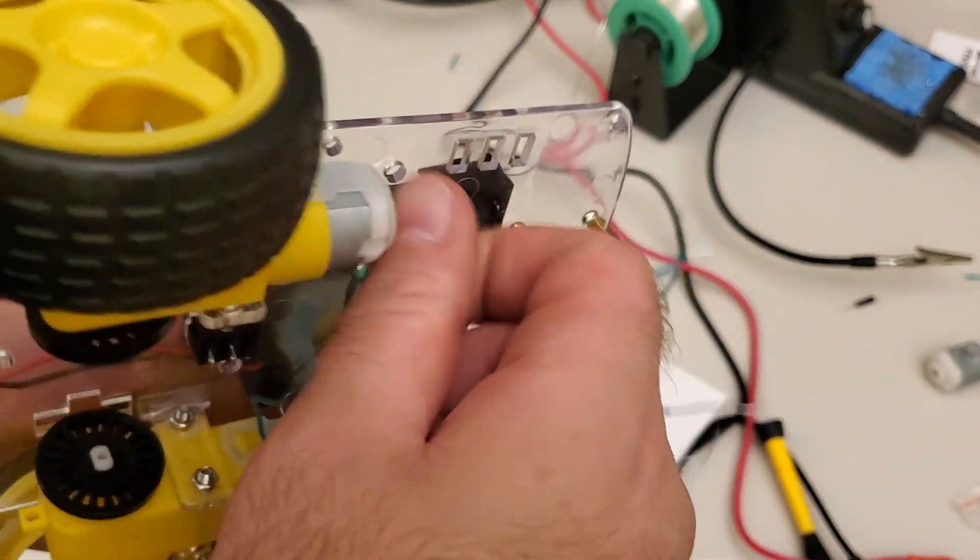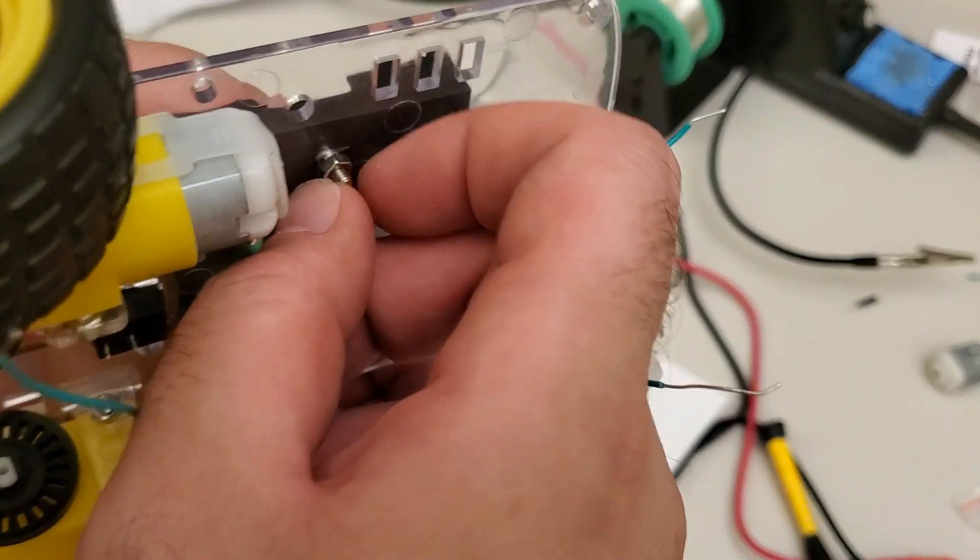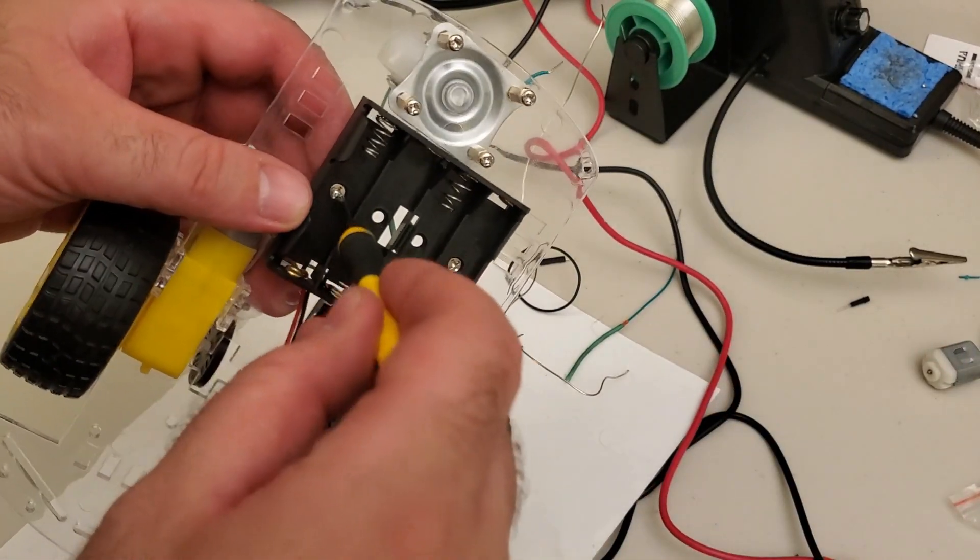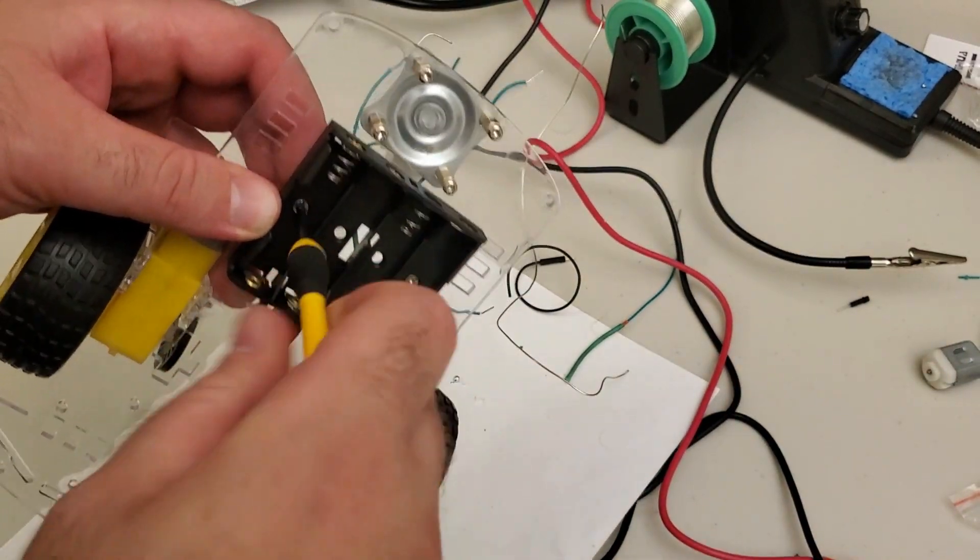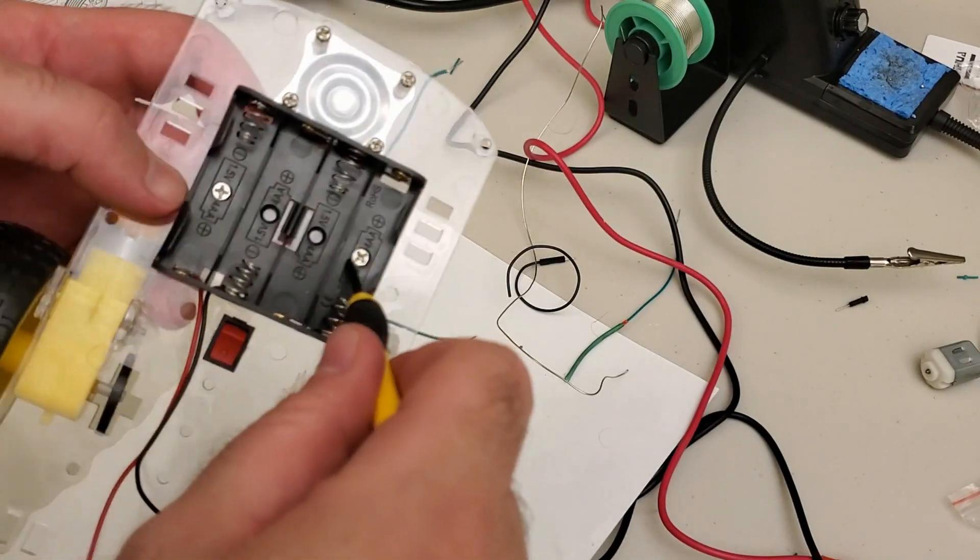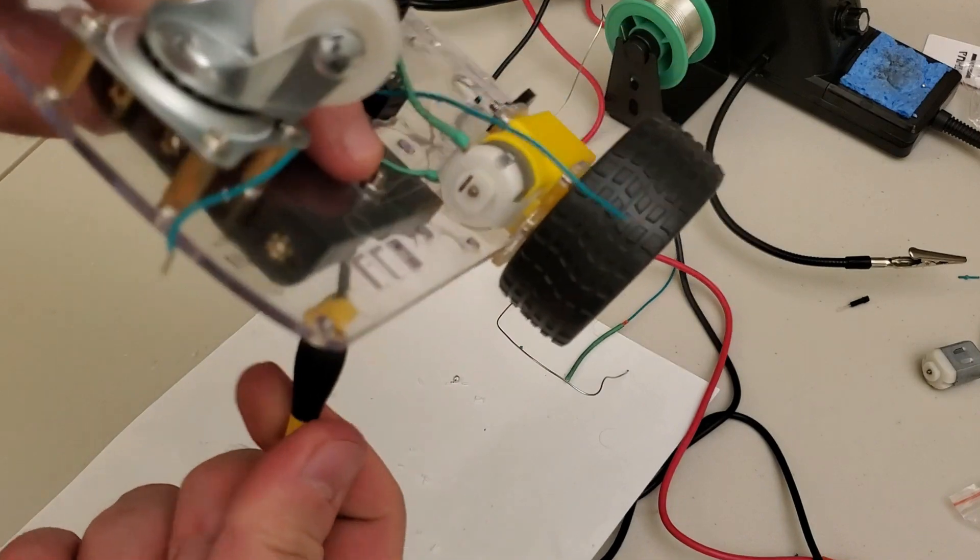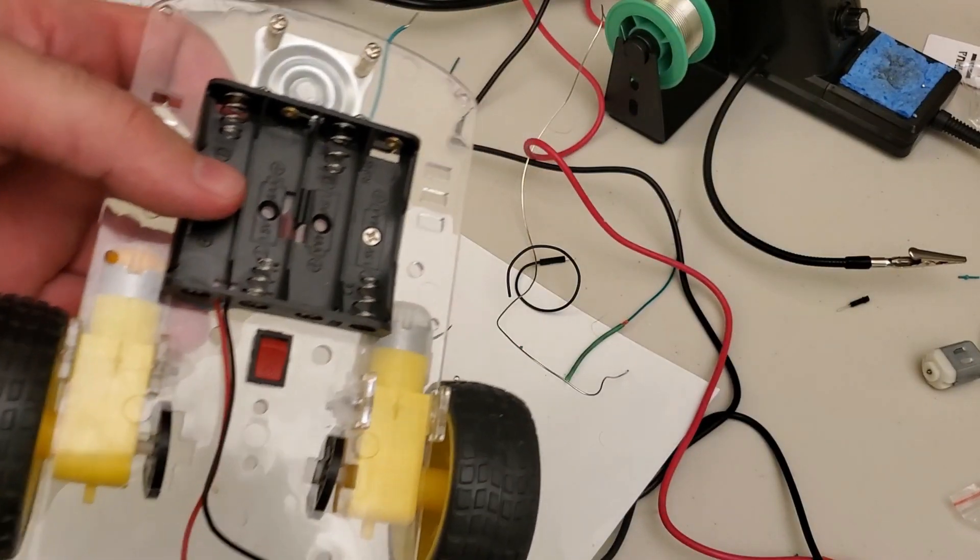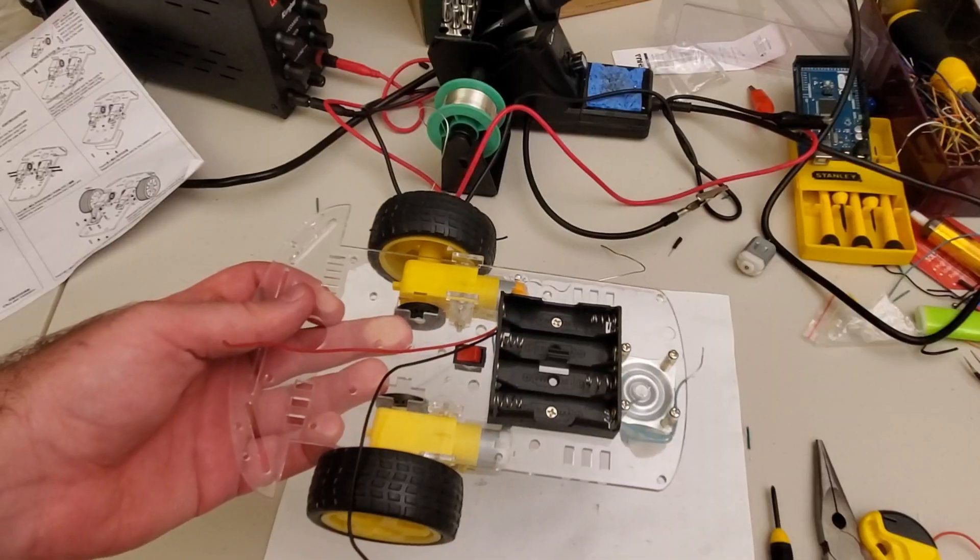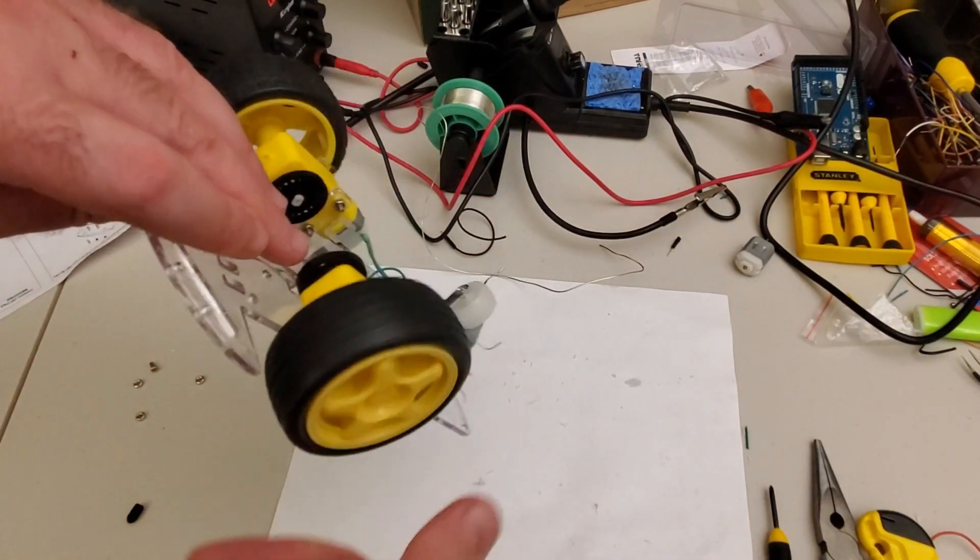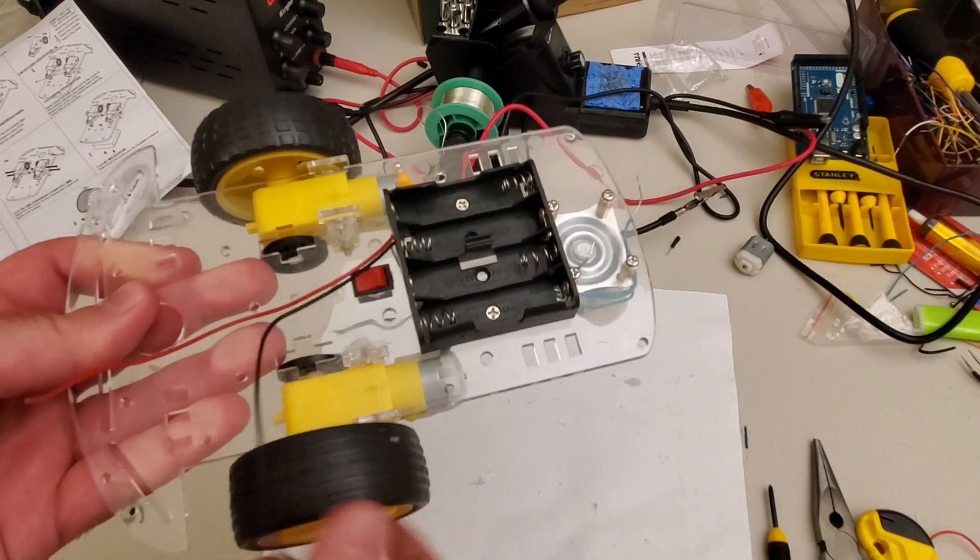Okay. Here are the nuts, and then you can use a screwdriver to fix the battery container while holding the nut on the other side. And finally, here it is. Here is the completed assembly of the differential wheeled robot.